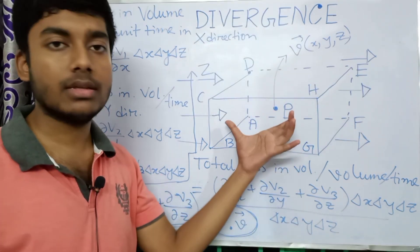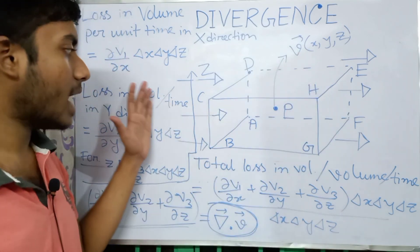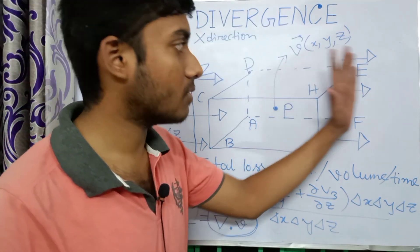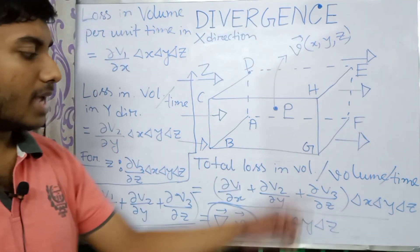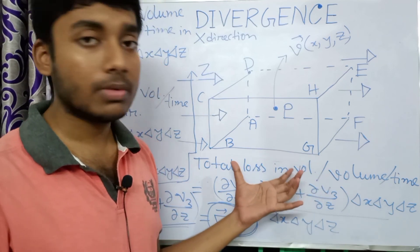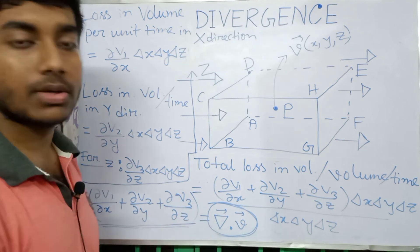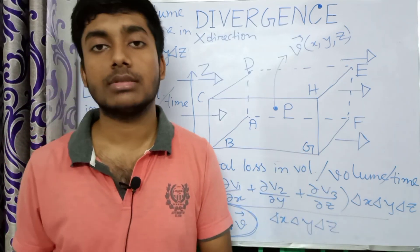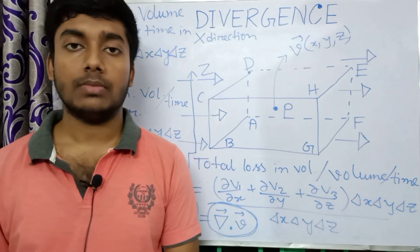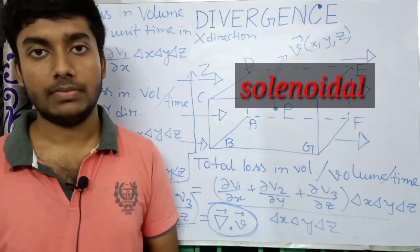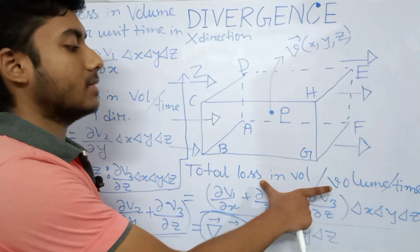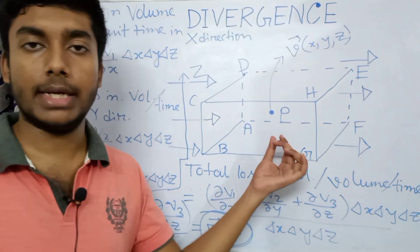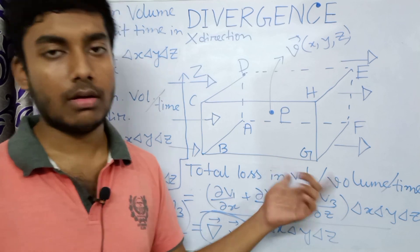If in this region there is no source or no sink, then the amount of fluid entering the parallelepiped equals the amount leaving it, so the total loss in volume per unit volume per unit time is zero — that is del dot v equals zero. When this happens, we say the vector field is solenoidal. This expression for the flux entering or leaving a point is nothing but the divergence at that point of the vector field v.